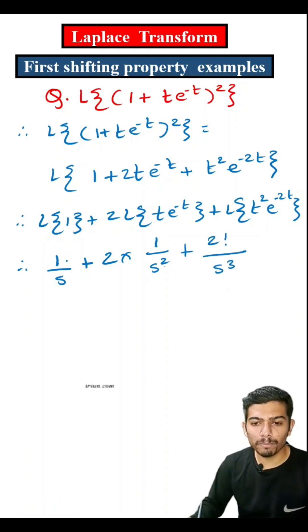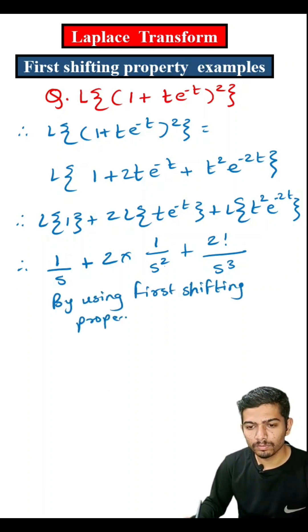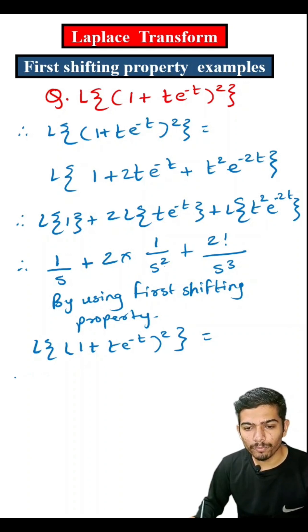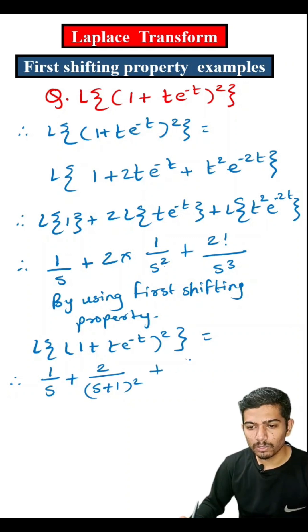Now, we will use first shifting property. In the first term, there is no need to apply first shifting property but in next two terms, we have to use the first shifting property. So therefore, 1 upon s plus 2 upon (s plus 1) bracket square plus 2 upon (s plus 2) bracket cube.